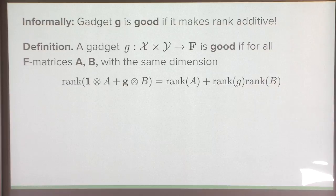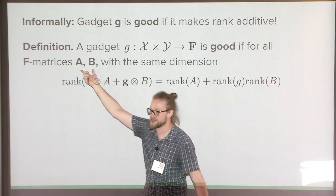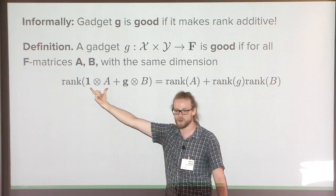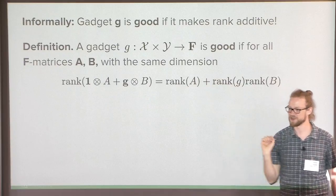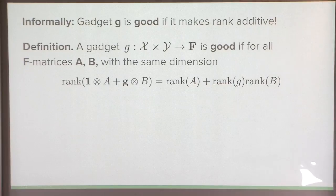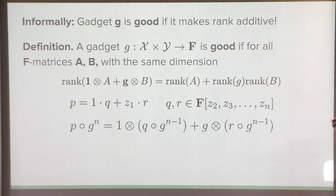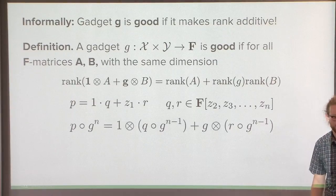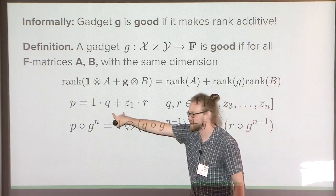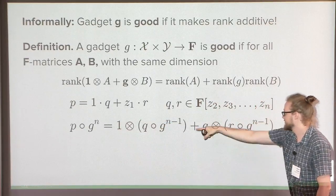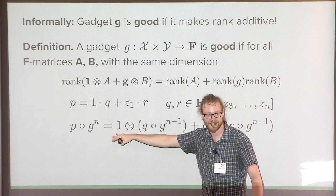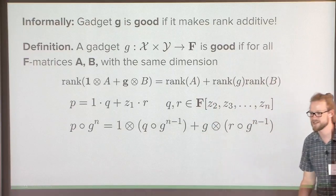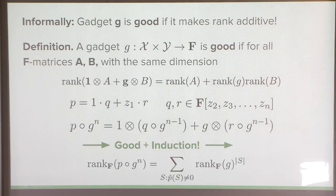What is a good gadget? It's just good if, for every pair of matrices with the same dimensions, tensoring with 1 on one side and g on the other makes rank additive. Once we have this, it's just a straightforward induction: take your polynomial, factor out the first variable, and inductively, after doing the composition, we know it will have the right form — just take out the 1s and the g's and inductively continue down.